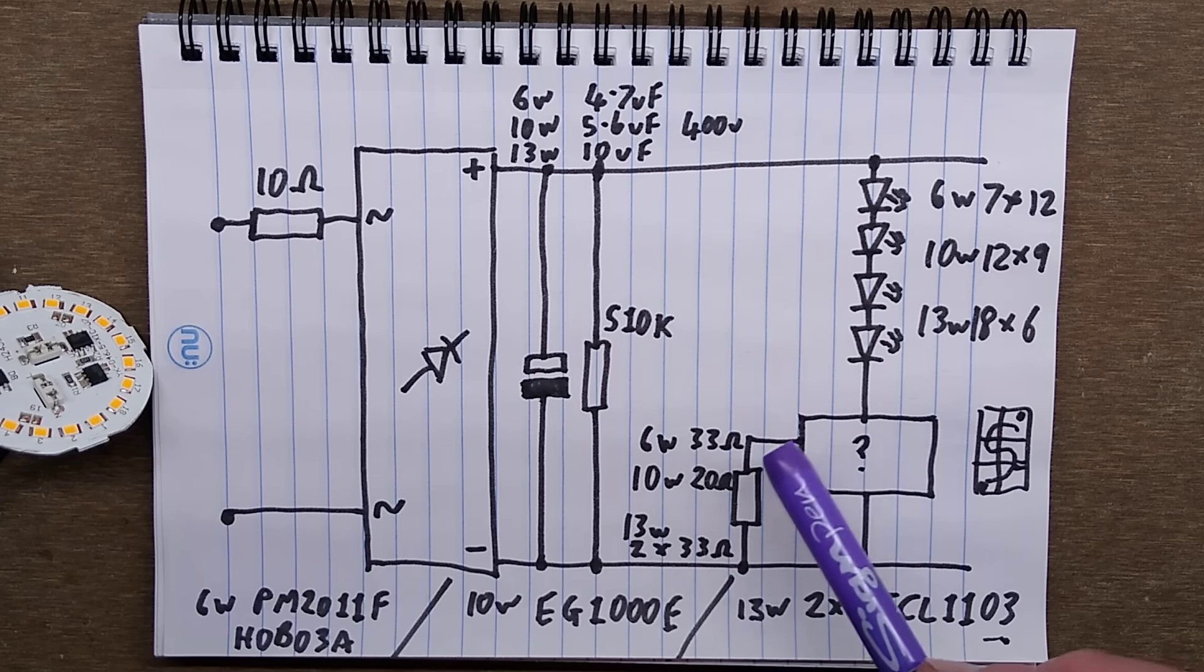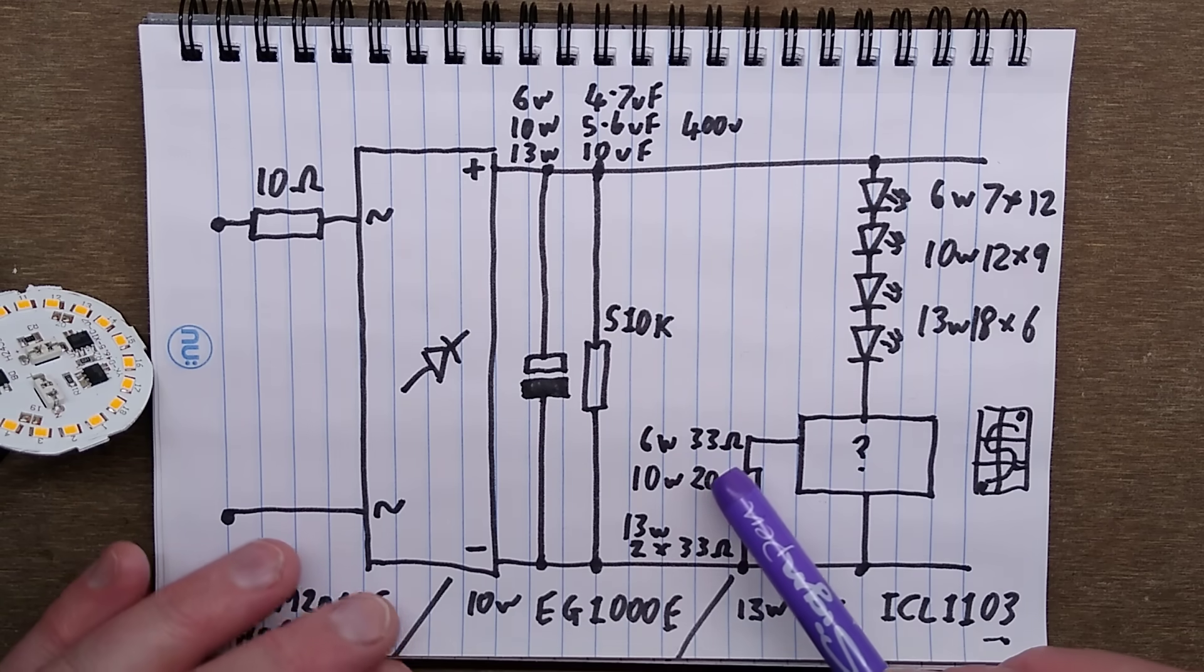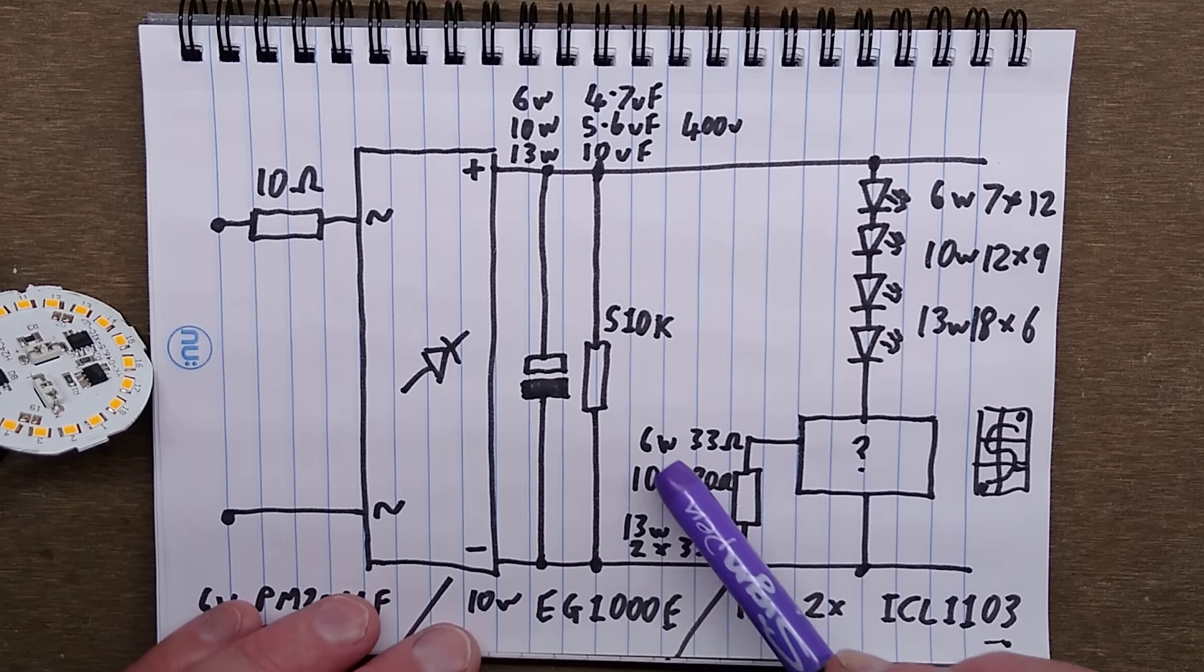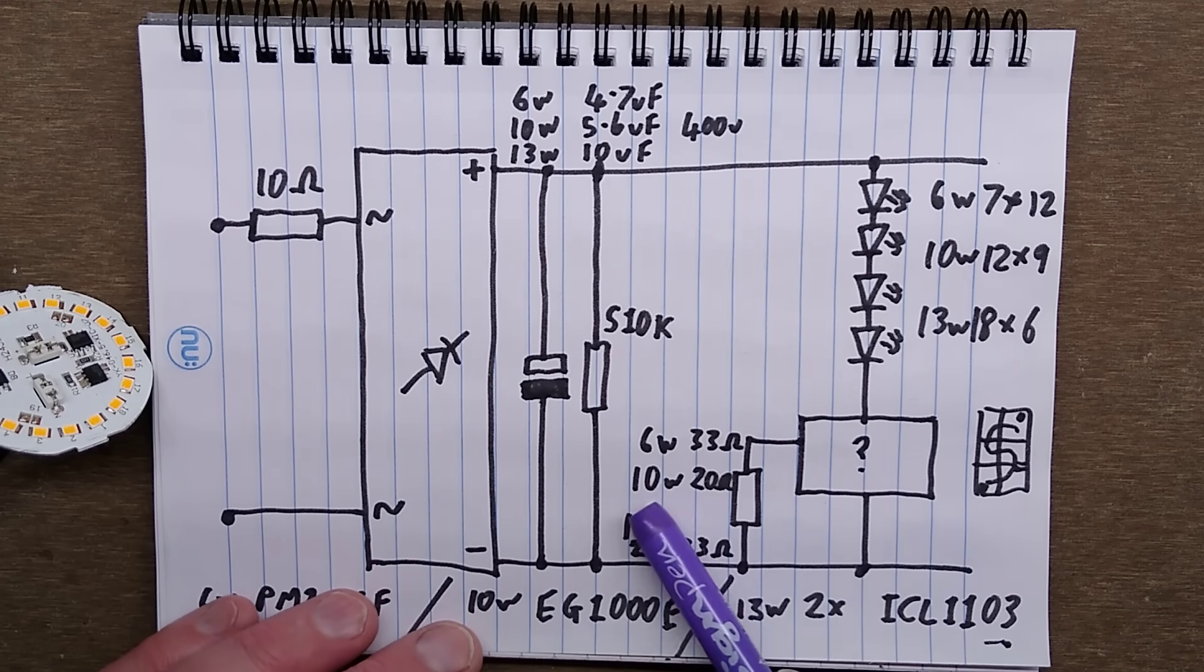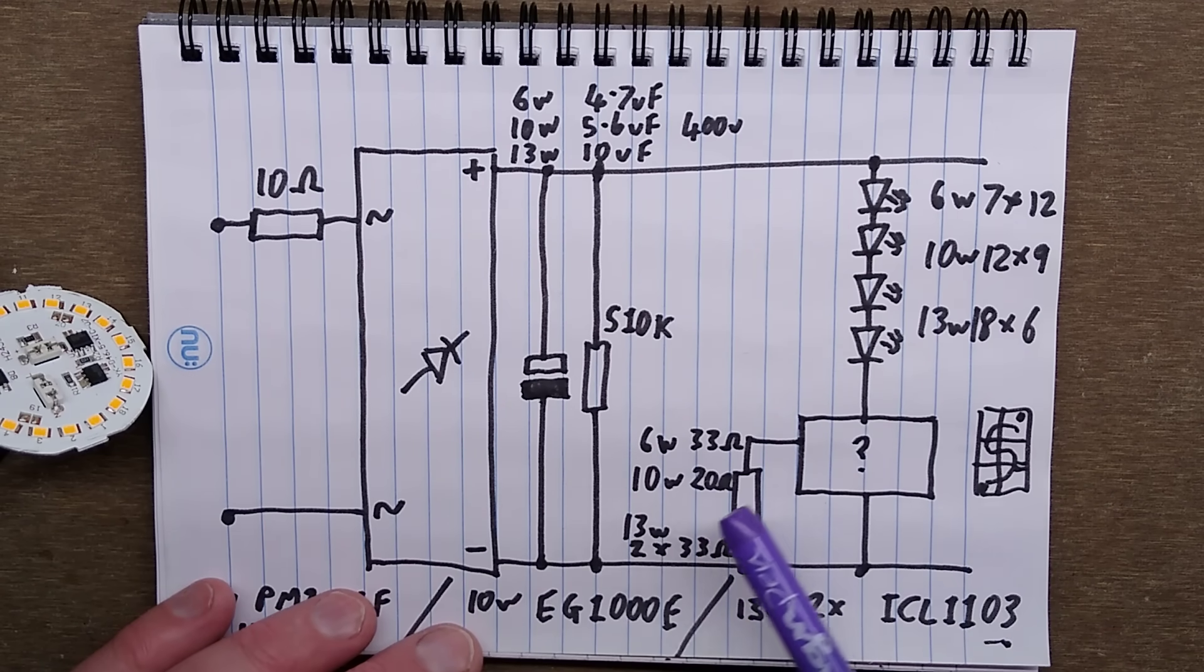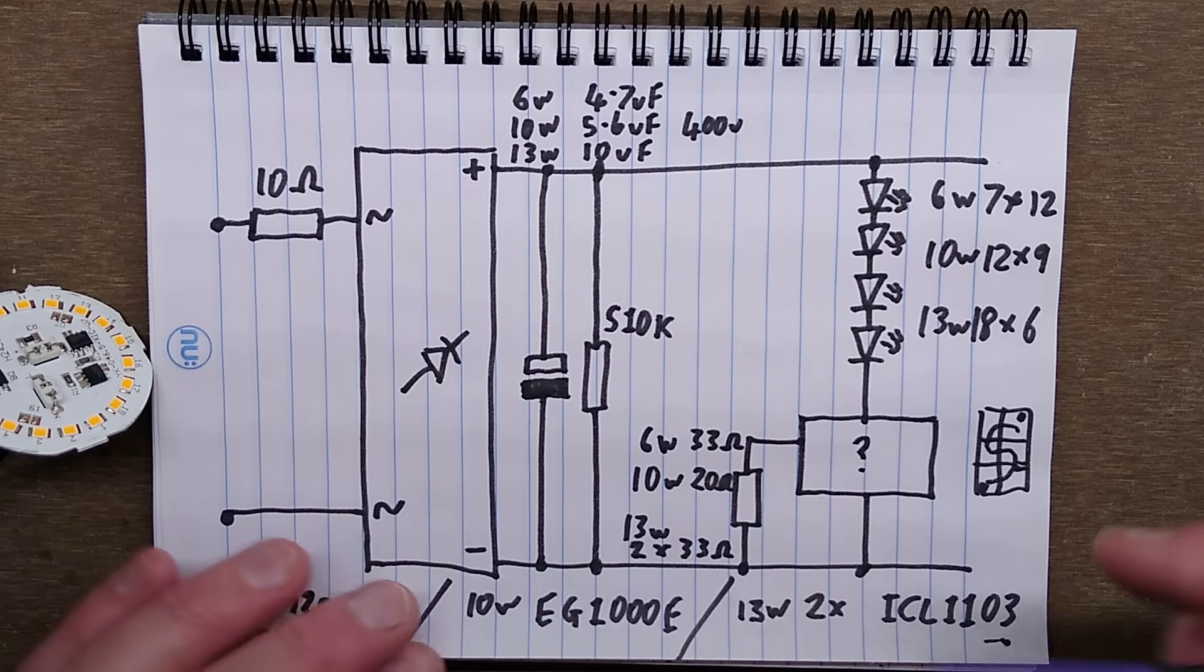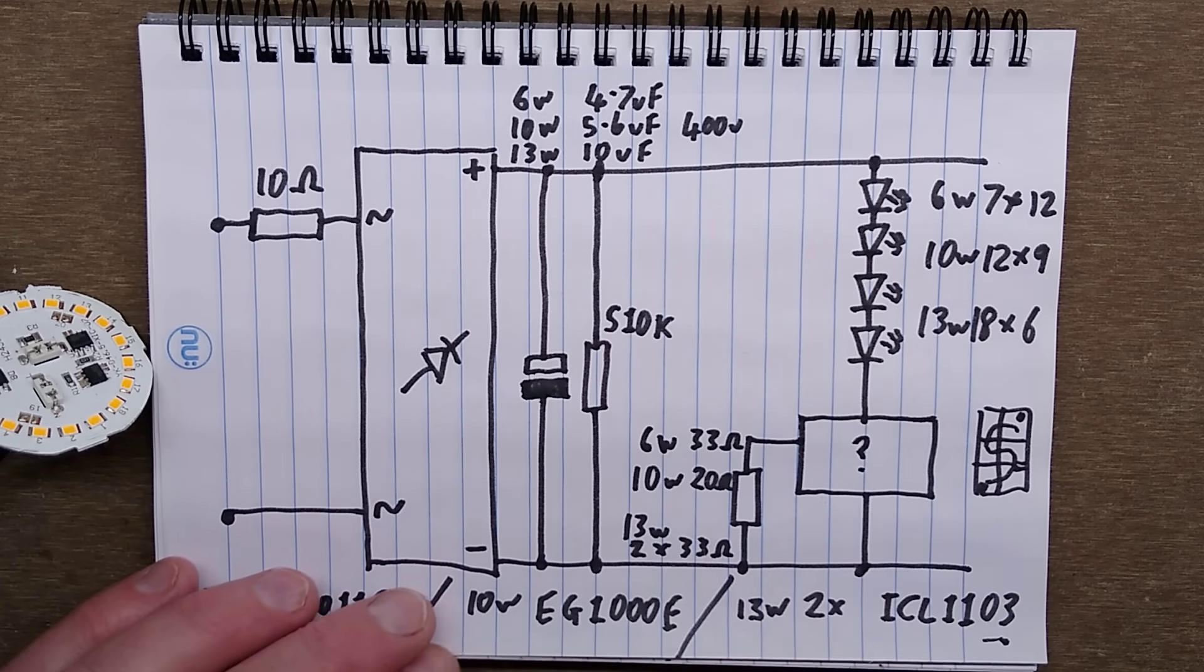In the case of the 6 watt one, you'd replace the 33 ohm resistor with 68 ohms, which would pretty much half the value. In the case of the 10 watt one, the 20 ohm resistor would be replaced with 39 ohms - that would roughly half it.